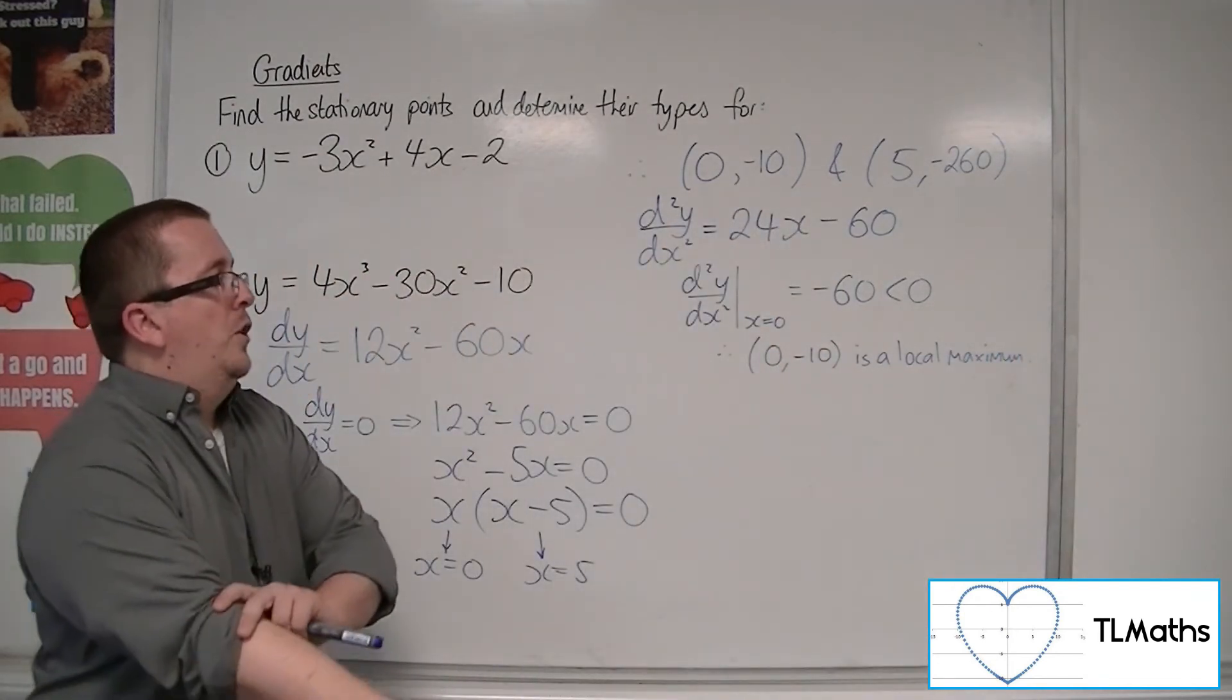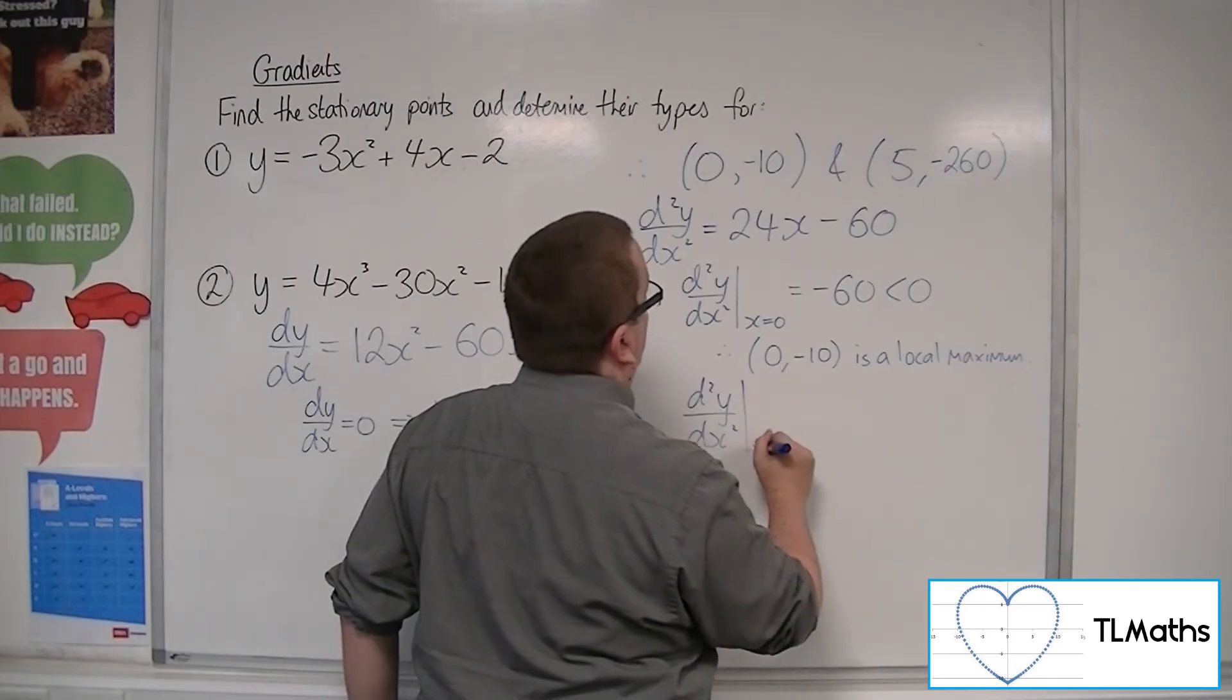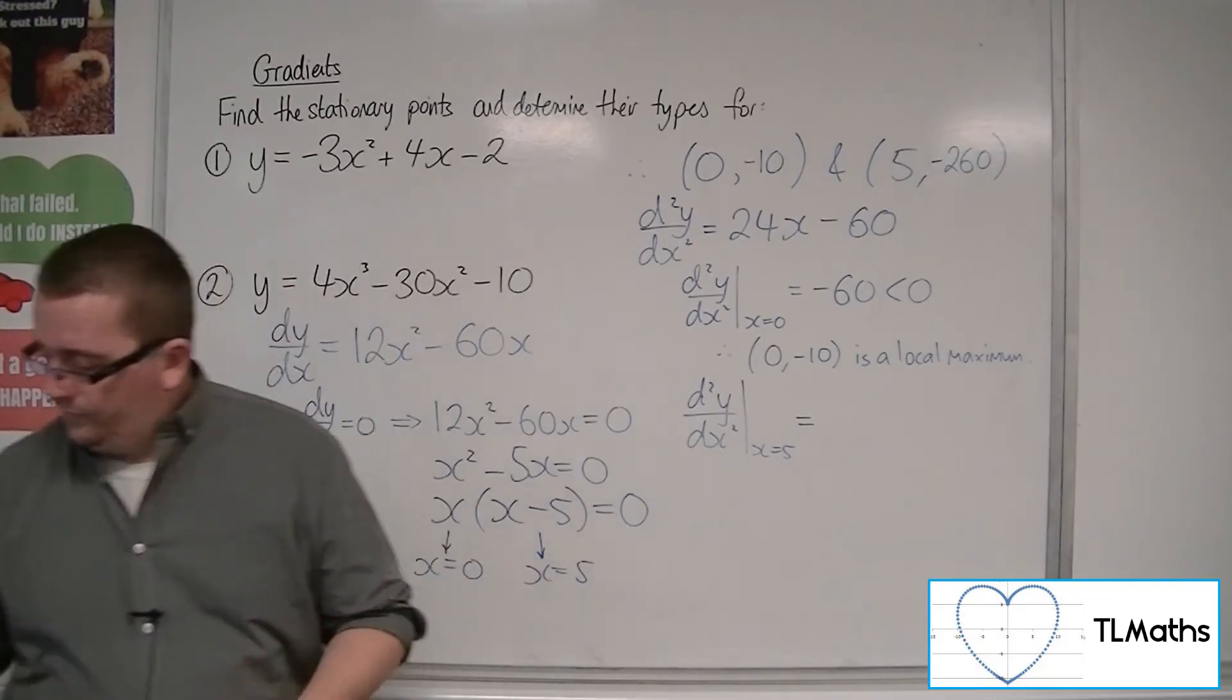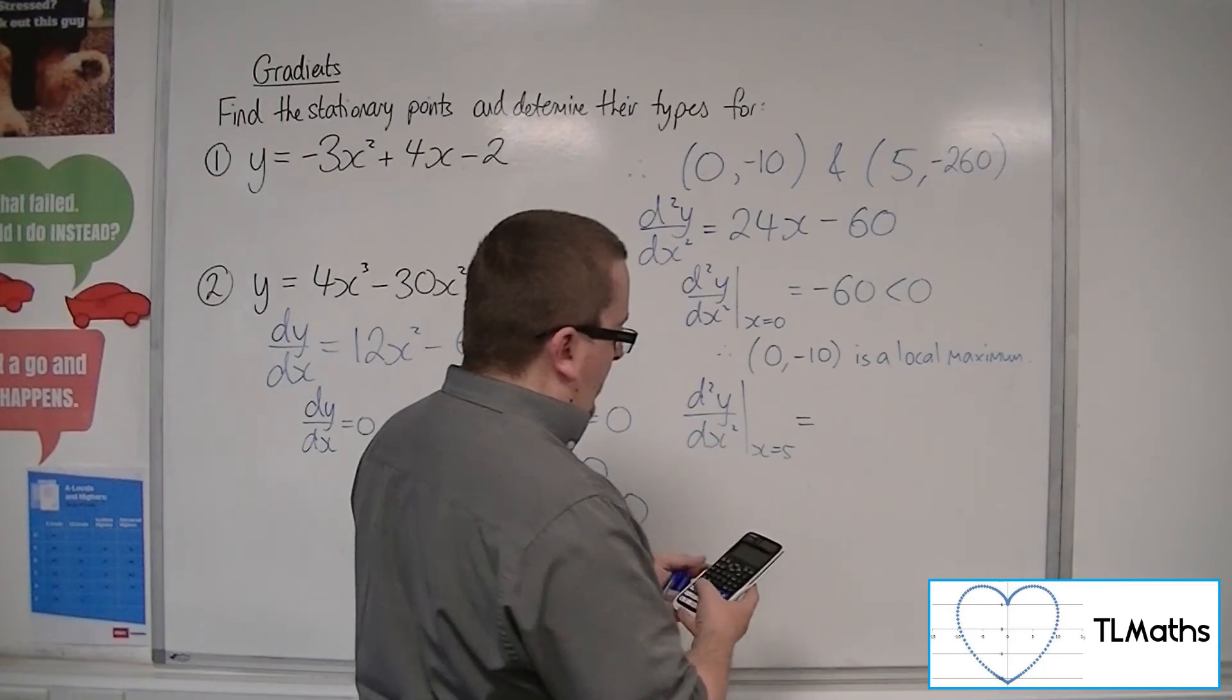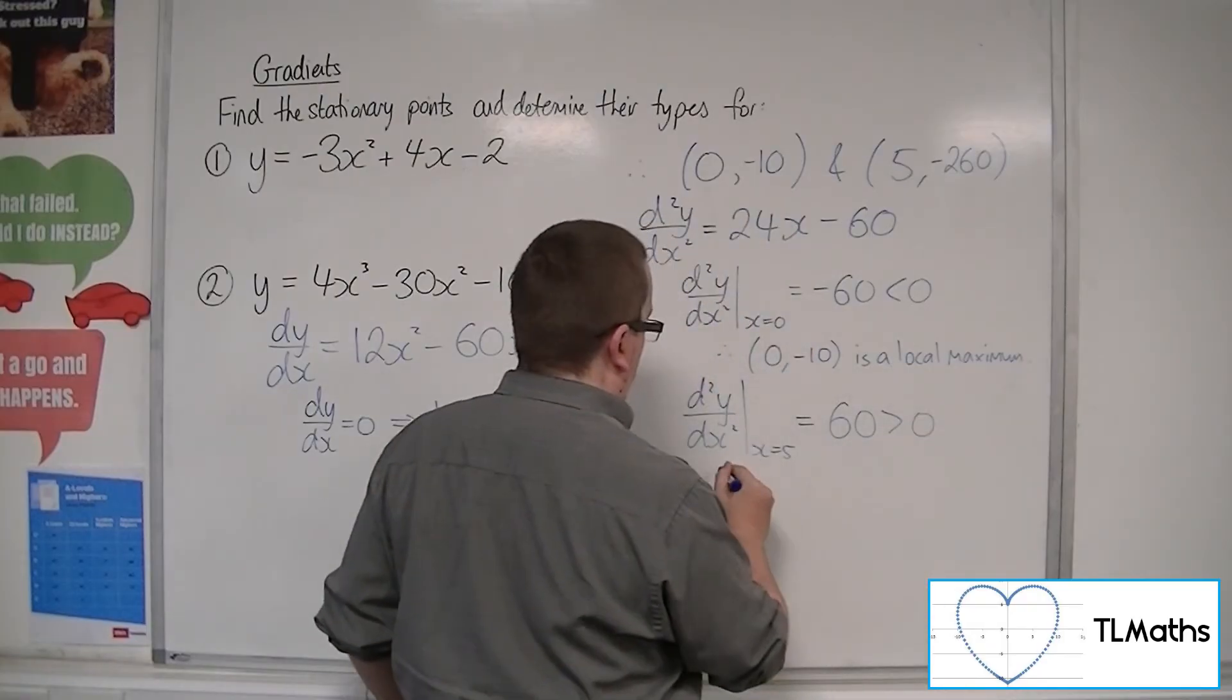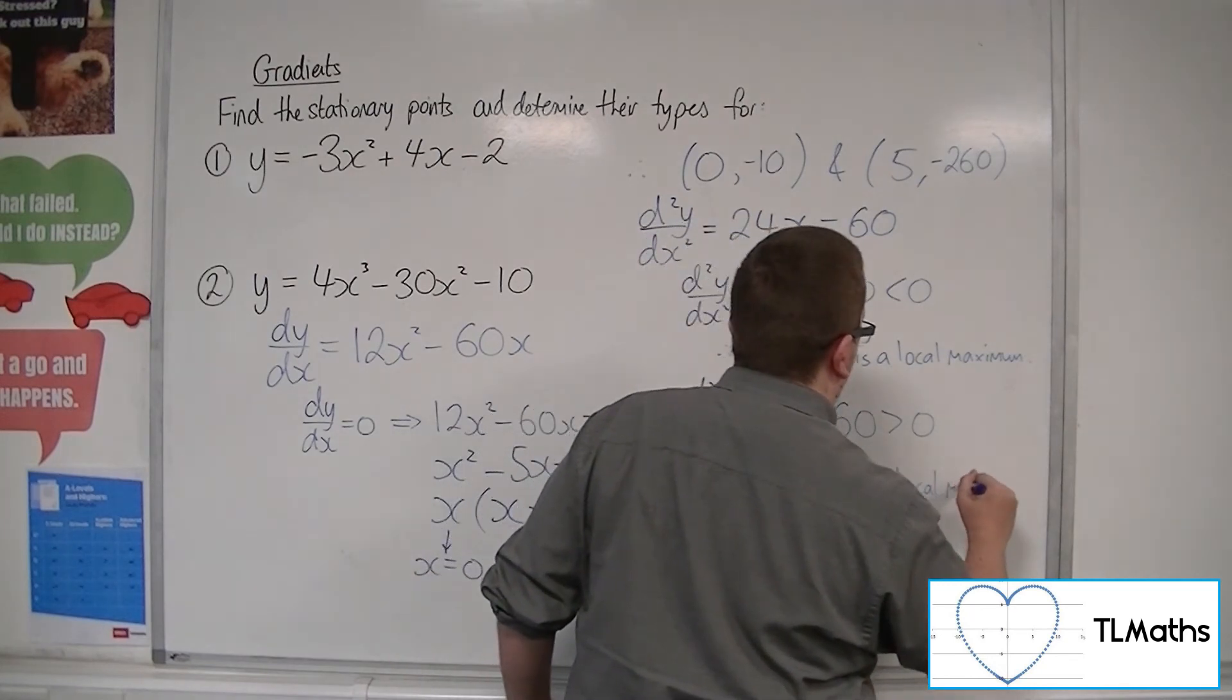So we've got the first one. We know what it looks like. Then we do the same for the other coordinate. So at x is 5, what I get is 24 lots of 5 take away 60, which is 60. Now, because that one is positive, that means that 5 minus 260 is a local minimum.